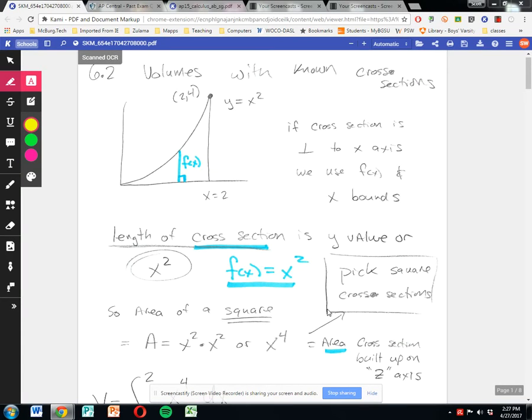Alright, 6-2 volumes with known cross-sections. First of all, if the cross-section is perpendicular to the x-axis, we use functions f of x, so solved for y, and we use x-bounds. If by some chance the cross-section is perpendicular to the y-axis, then we use g of y type functions. They should be solved for x, and we use y-bounds.